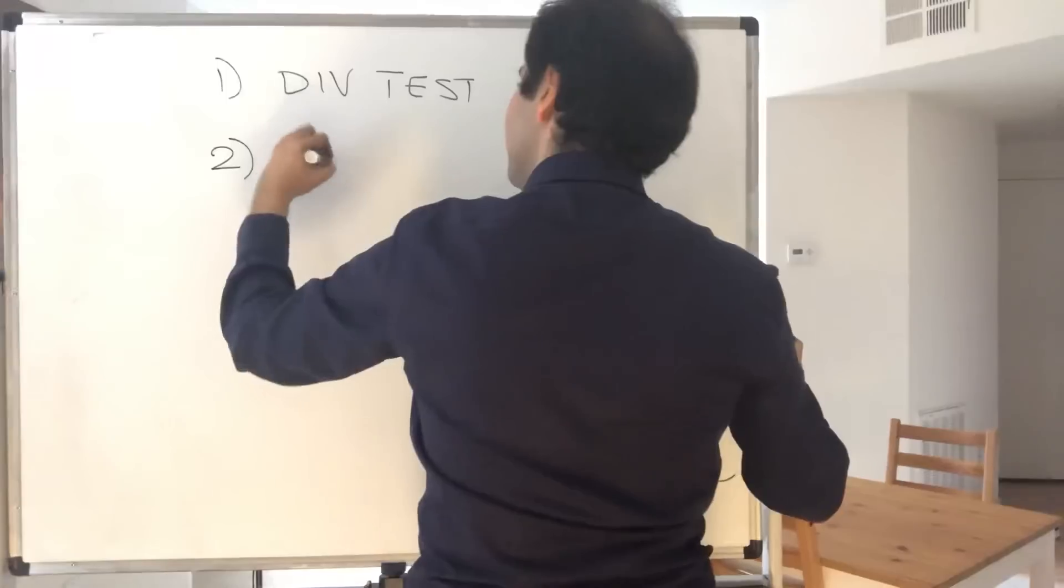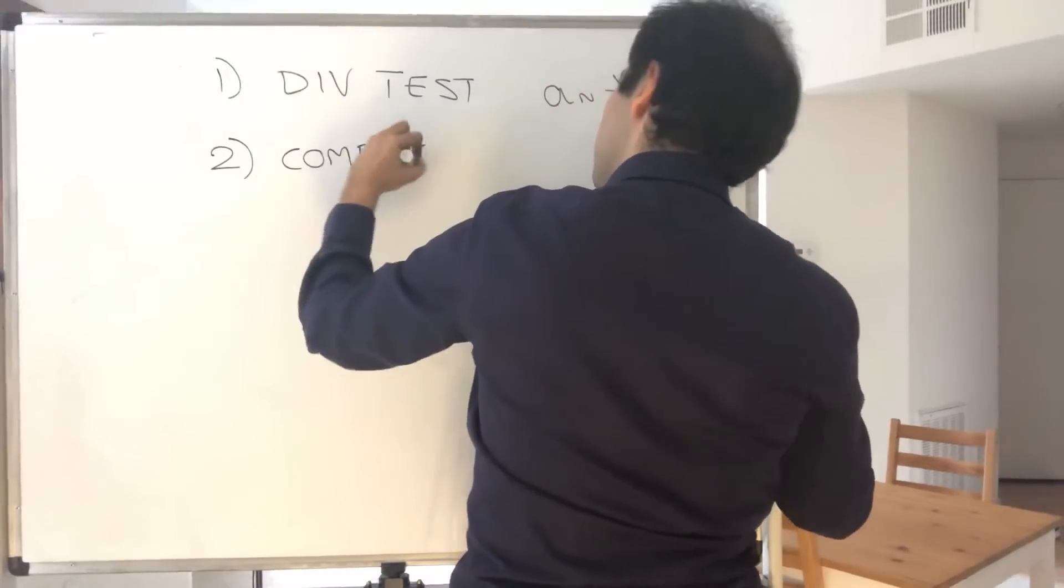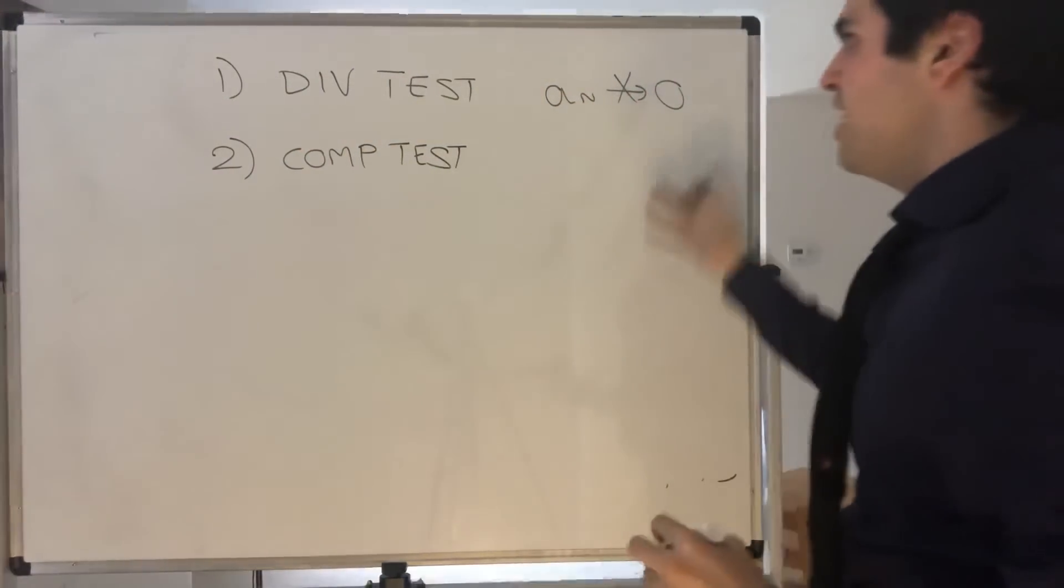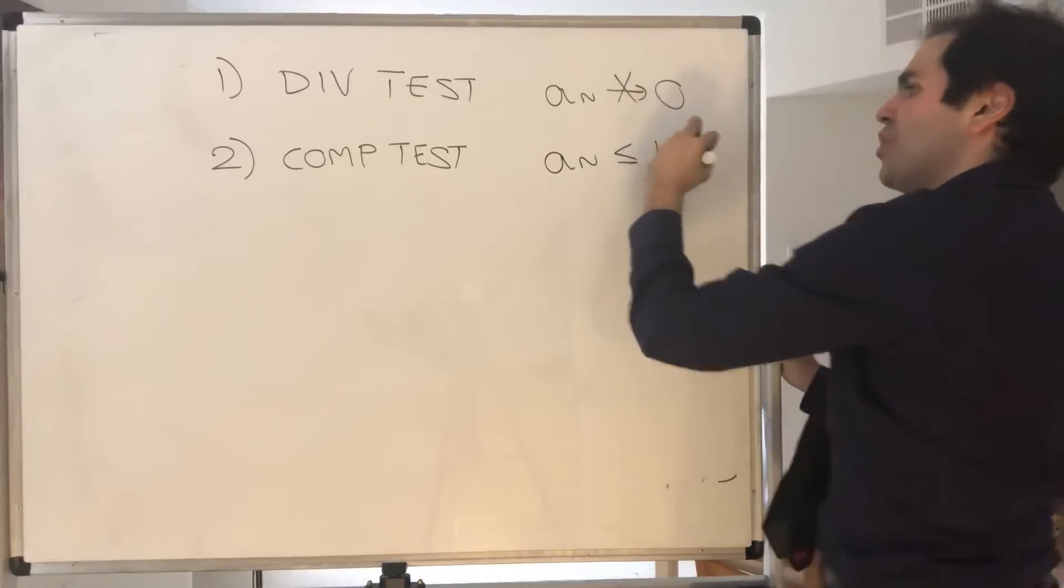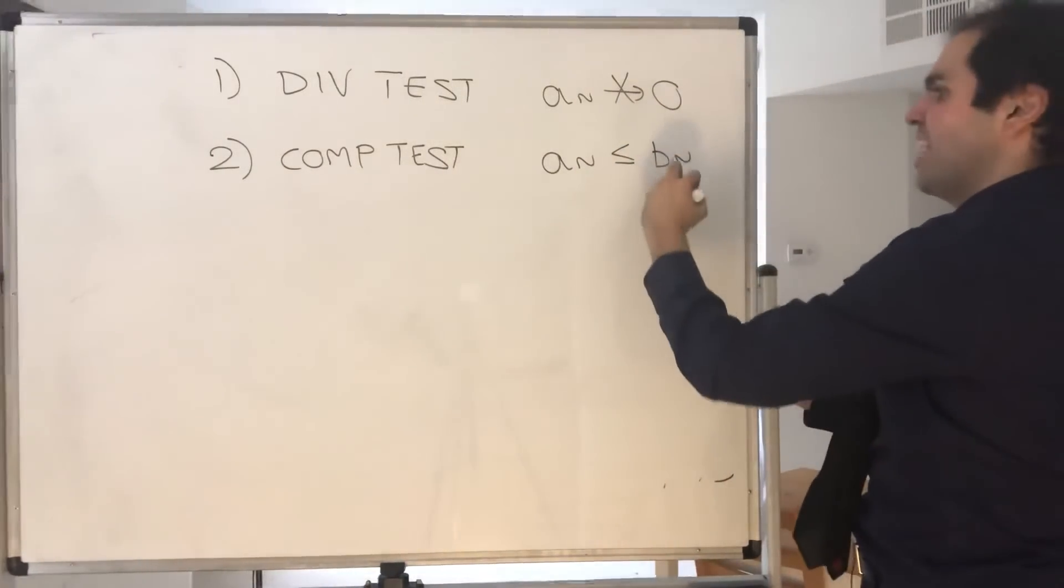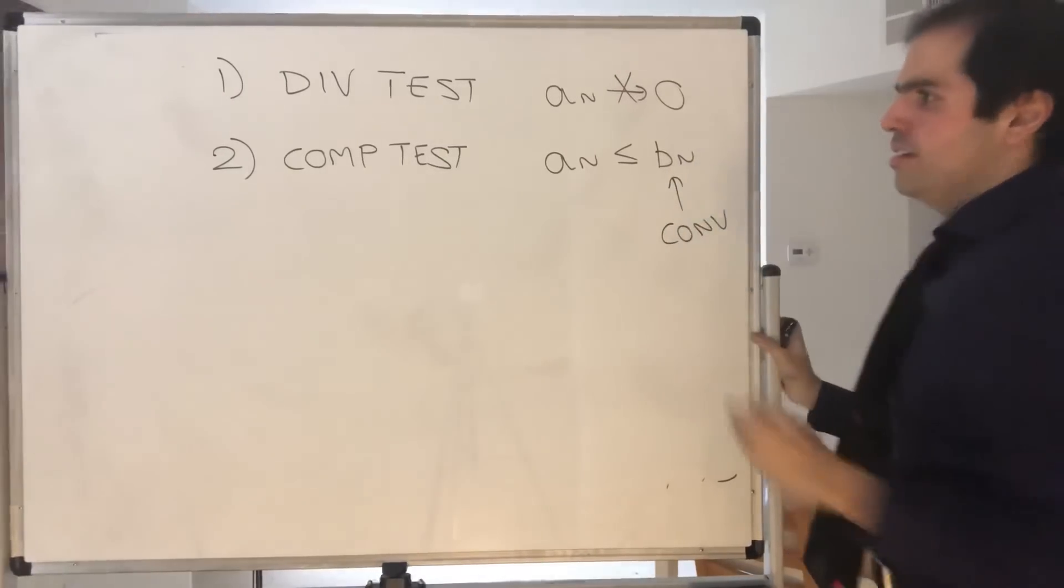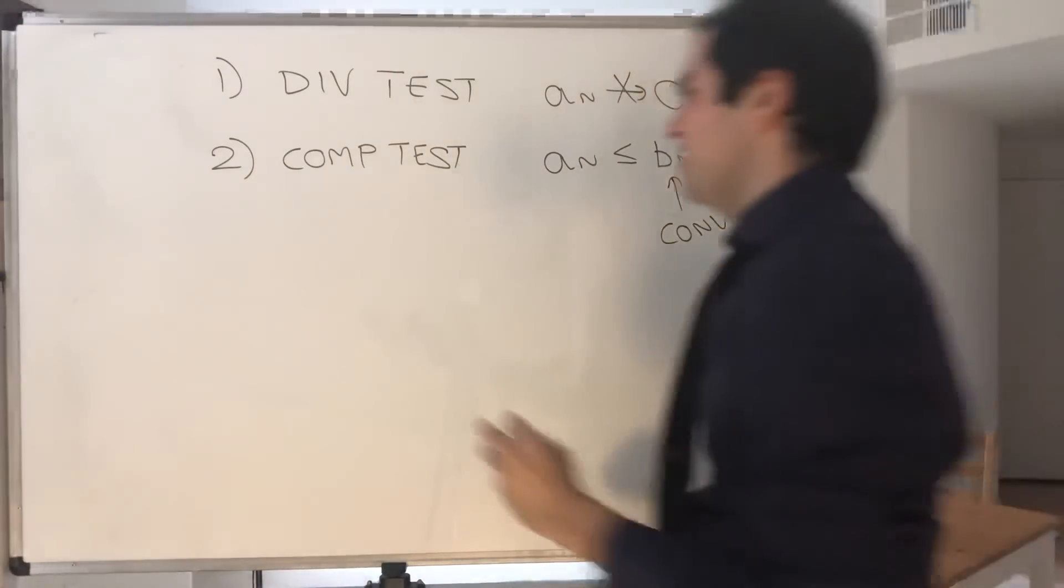Then, there's a comparison test, which says that if a series a_n is less than or equal to a convergent series, then it converges. Again, at least non-negative, let's say.